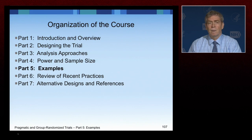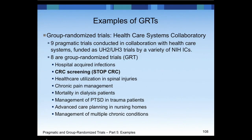The outline of the course is shown here, and today we will focus on some examples of group randomized trials. The examples I'm going to share are from the Healthcare Assistance Collaboratory, a project funded by NIH as a common fund project. These are funded as cooperative agreements by a variety of different institutes and centers across campus — not all from cancer or heart, lung, and blood. There are nine currently funded, and as it turns out, eight are group randomized trials. This is not terribly surprising because pragmatic trials are often done in the real world working with existing systems, and so very often employ group randomized trial designs.